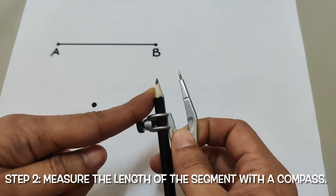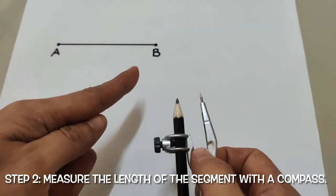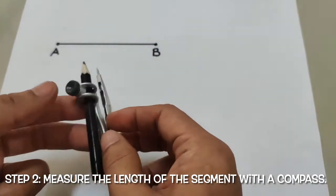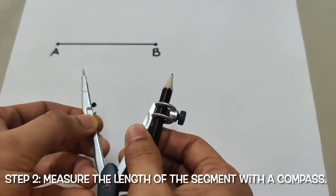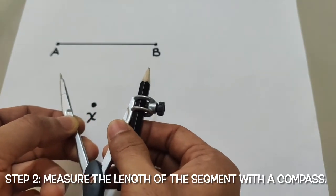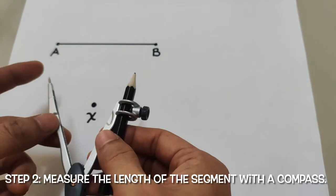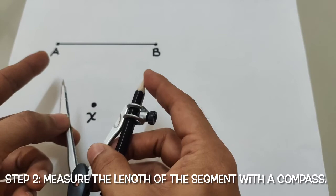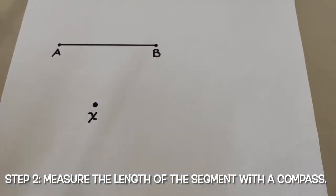To measure the length of segment AB, we are going to spread the compass towards the length of the segment. Make sure that your pointer and your pencil are pointing to both points A and B, like this.